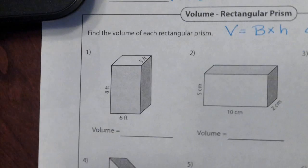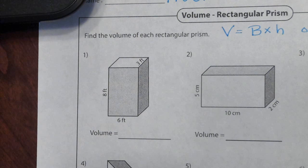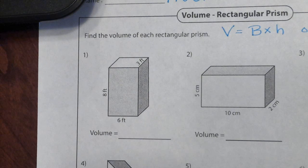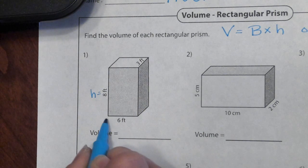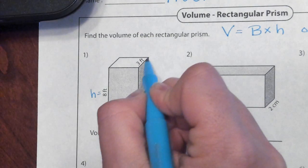I'm going to do a couple of these with you, and I want you to practice and do some tonight. You can either scan the paper or do it on loose-leaf paper. Looking at my rectangular prism, I have a height, I have a length, and I have a width.